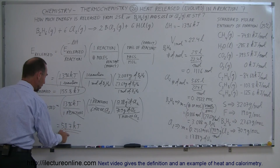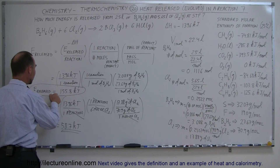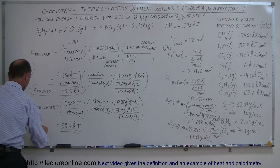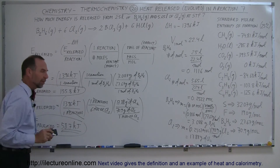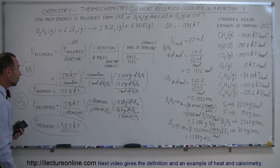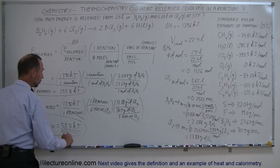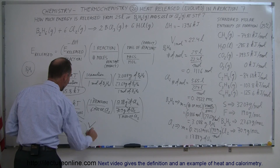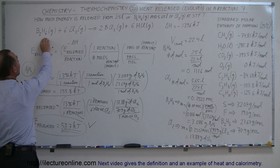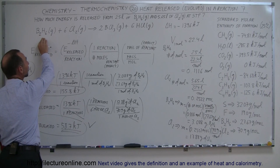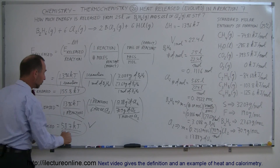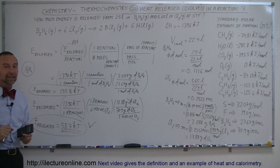Notice that 58.7 kilojoules is a smaller number than the 155.8 kilojoules from diborane. So the chlorine gas is the limiting reagent. That means the maximum energy released will be 58.7 kilojoules, because all the chlorine gas is used up first, and none of the remaining diborane can react further. So the answer is 58.7 kilojoules.